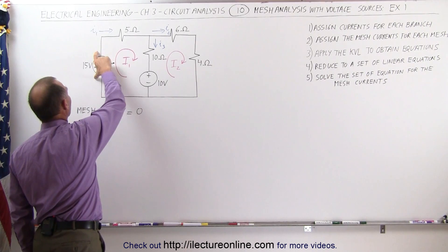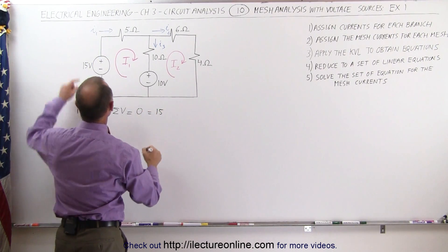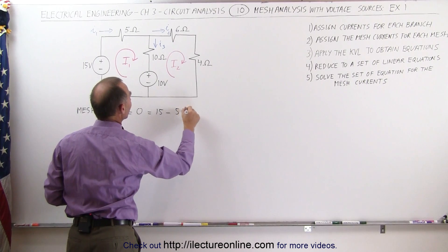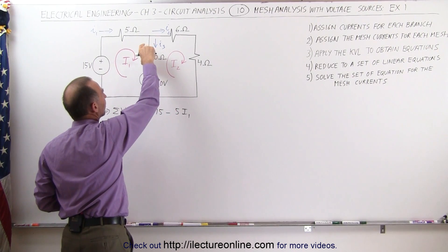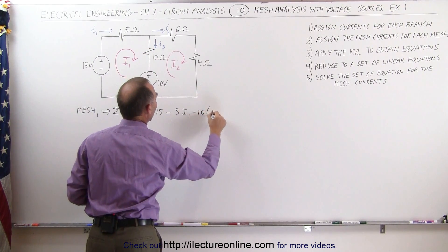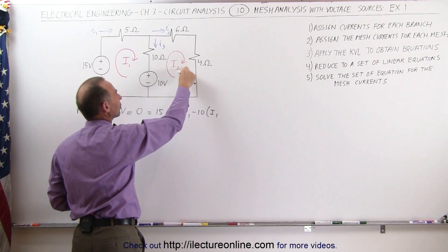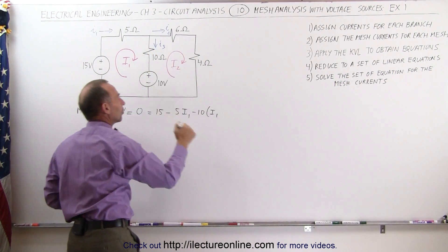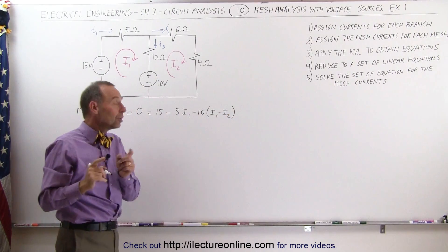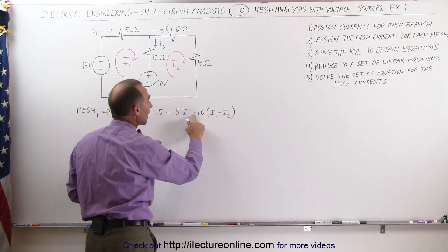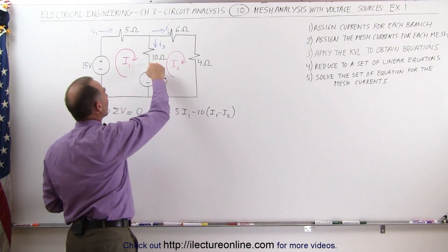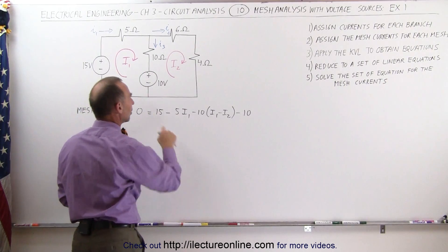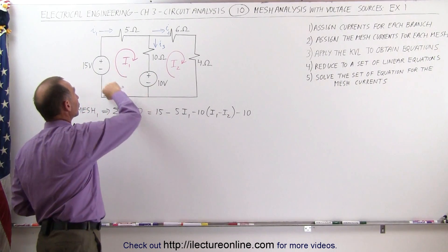Starting from this corner right here, going past this voltage source, that is a plus 15 volt rise. Then we have a voltage drop across this resistor: minus 5 times I1. Coming down this branch, that is a voltage drop across this resistor: minus 10 times I1. But relative to the other mesh current, I2 is going in the opposite direction to I1, so there's a voltage rise relative to this current, making this a minus I2 — because minus times minus makes a plus voltage rise. Then going across this voltage source from positive to negative, that is a minus 10 volt drop, and then we get back to the same point we started. This is our first equation summing all voltages around mesh one.